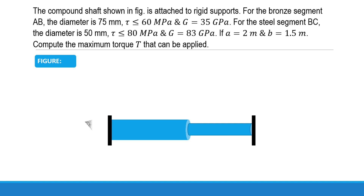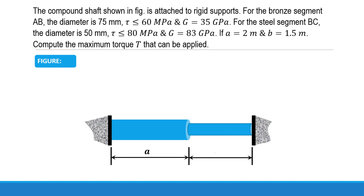The arrangement of the compound shaft is as shown. The shaft is fixed at both ends and is subjected to an anti-clockwise torque T at the junction of the two shafts. The lengths are a and b as shown.